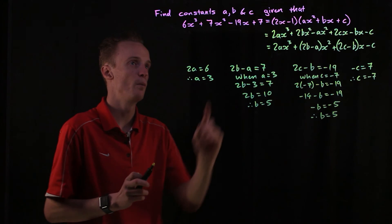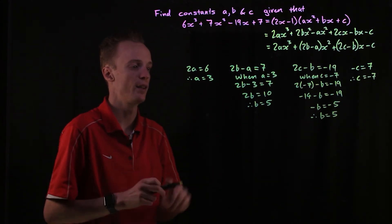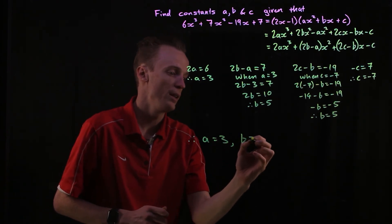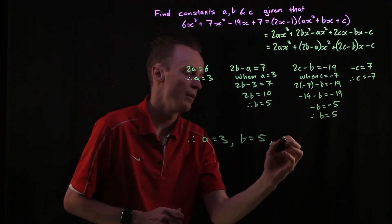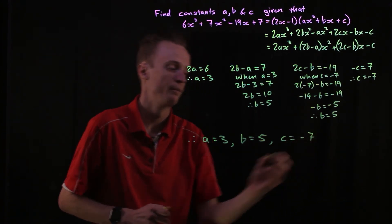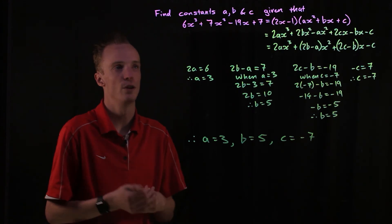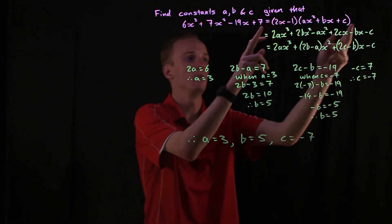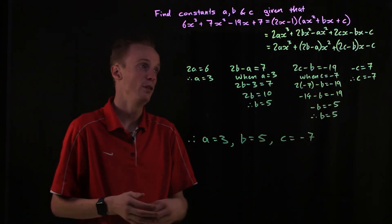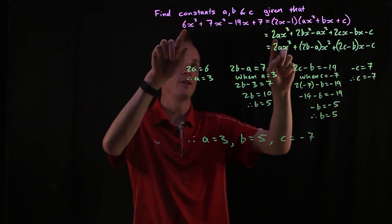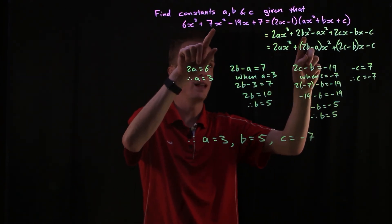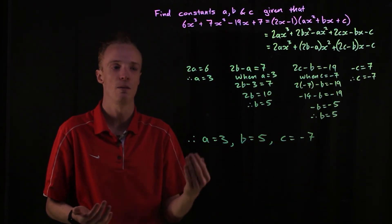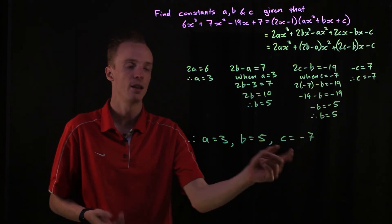So what I can see here is I can determine the values of a, b and c. Therefore my value of a must be equal to 3, my value of b must be equal to 5, and my value of c must be equal to negative 7. The process we've used here is known as equating coefficients. When we're looking at two polynomials that are equal to each other, the coefficient of each degree must also be equal to each other, and we can use that information to determine what these unknown values actually are.